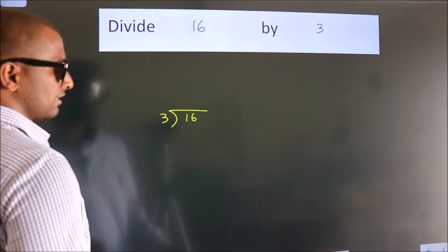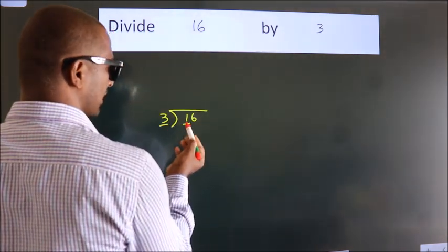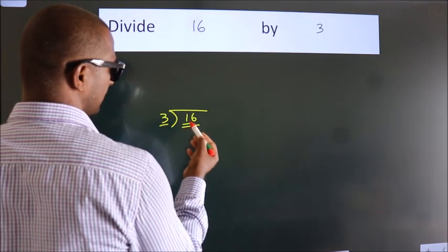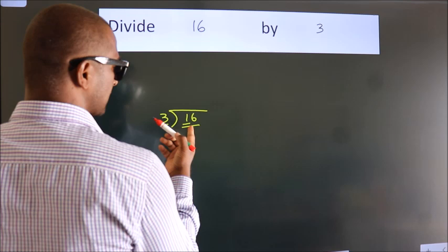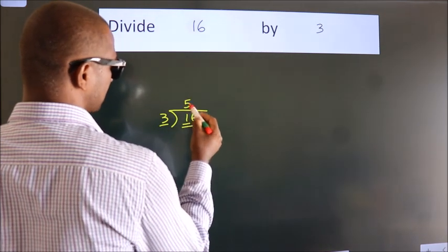Next. Here we have 1, here 3. 1 is smaller than 3, so we should take two numbers, 16. A number close to 16 in the 3 table is 3 fives 15.